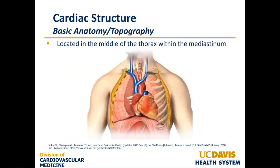In terms of basic anatomy and topography of the heart, it's important to remember the heart is located in the middle of the thorax within the mediastinum, specifically between the third and sixth costal cartilages. The heart functions to supply tissues throughout the body with oxygenated blood. While the exact position is variable, the heart tends to lie fairly horizontal with the apex directed towards the patient's left side. However, there are situations such as dextrocardia where the heart is on the opposite side, and it's important to recognize this normal anatomy so such variants can be identified.